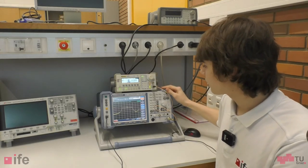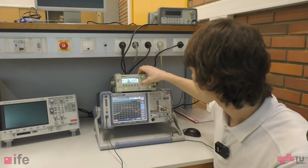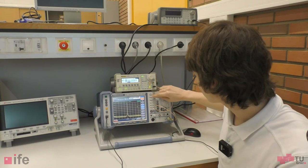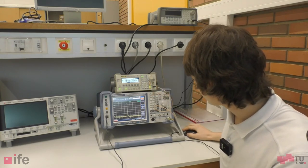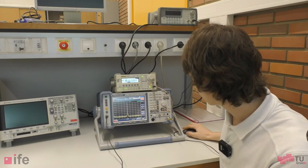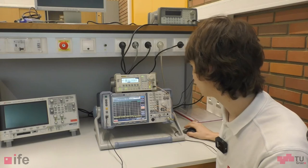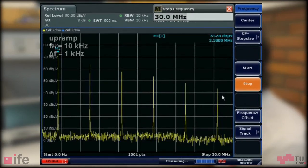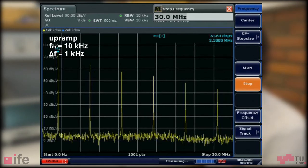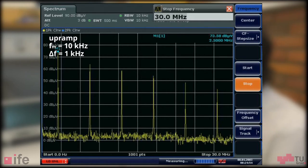Now we only had a look at the frequency band around the fundamental frequency. Let's increase the bandwidth of the spectrum analyzer so we can see some of the harmonics as well. I'll set the stop frequency to 30 megahertz and now we can see five harmonics of our rectangular carrier signal. Okay, I will once again increase the frequency deviation step by step and we can observe the frequency spectrum.